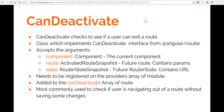To implement the CanDeactivate guard, we need to have a class decorated with the Injectable decorator — so it needs to be a service. This class needs to implement the CanDeactivate interface, which can be imported from Angular Router. If the class implements the CanDeactivate interface, it needs to define a method named canDeactivate.